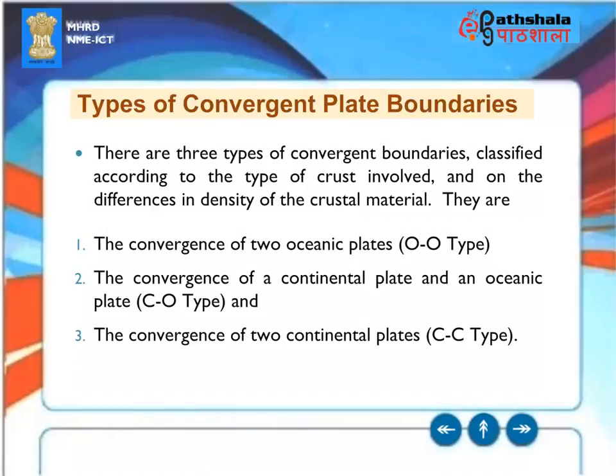There are three types of convergent boundaries, classified according to the type of crust involved and differences in density of crustal material: the convergence of two oceanic plates (O-O type), the convergence of a continental plate and an oceanic plate (C-O type), and the convergence of two continental plates (C-C type).